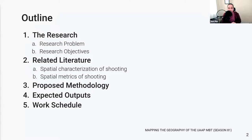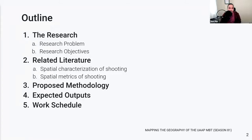A brief outline of my presentation this afternoon: I will first go over what the research is about, why it's important, the research problems I want to address, and the research objectives I want to achieve. I will then present some related literature, specifically about the spatial characterization of shooting or field goals, and the different spatial metrics being used to analyze shooting. Afterwards, I will discuss my proposed methodology, my expected results, and the remaining work schedule.